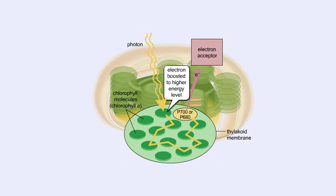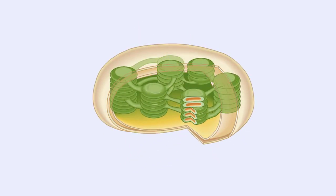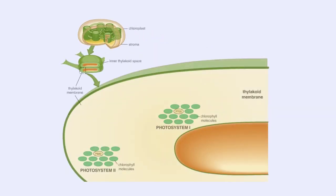Photosystems I and II are spatially connected to each other in the thylakoid membrane. Absorption starts the flow of electrons that result in the generation of ATP and NADPH.